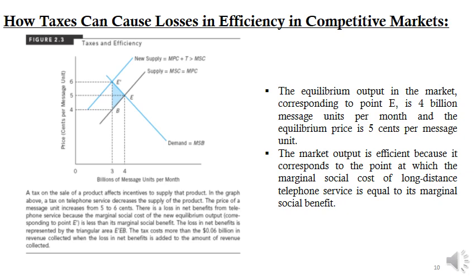Figure 2.3 shows the demand and supply curves for long-distance telephone services. Points on the demand curve reflect the marginal social benefit of any given number of message units, and points on the supply curve reflect the marginal social cost. The equilibrium output corresponding to point E is 4 billion message units per month, and the equilibrium price is 5 cents per message unit. This market output is efficient because marginal social cost equals marginal social benefit.